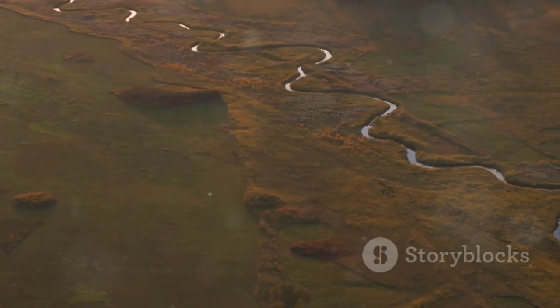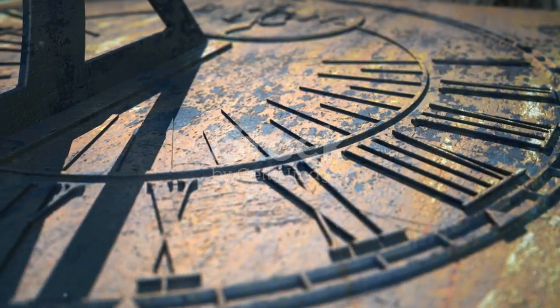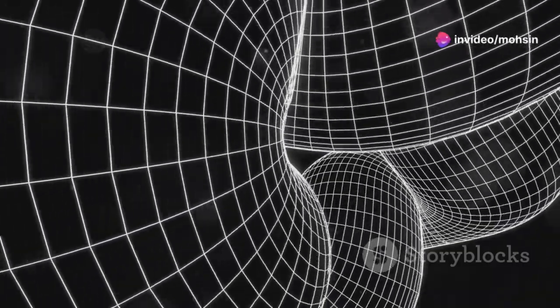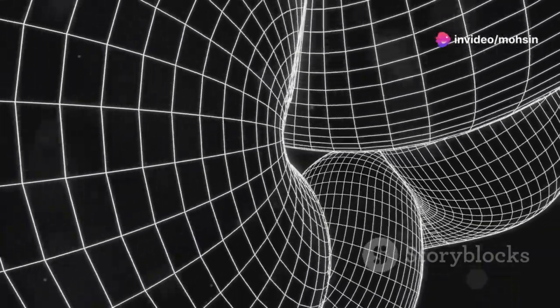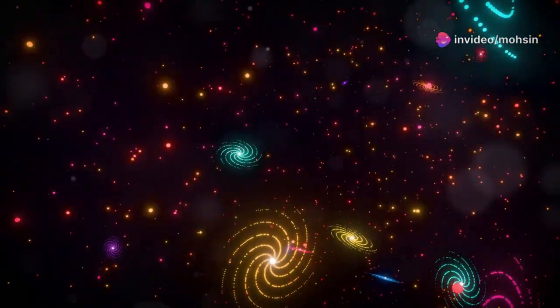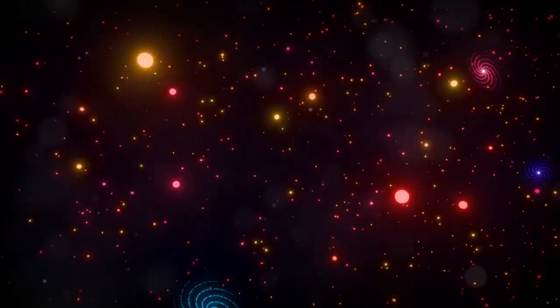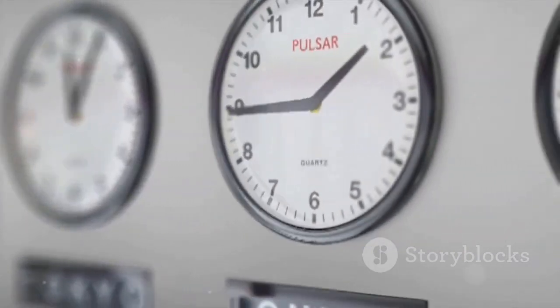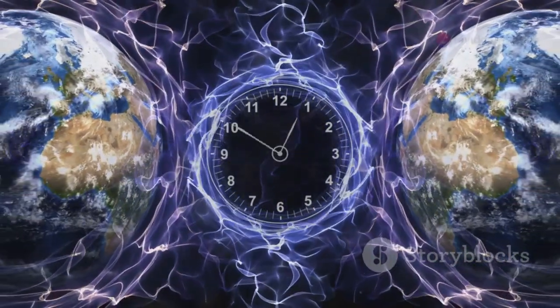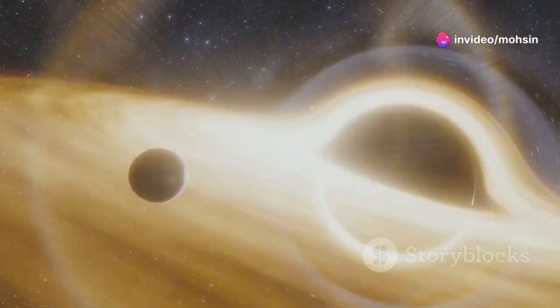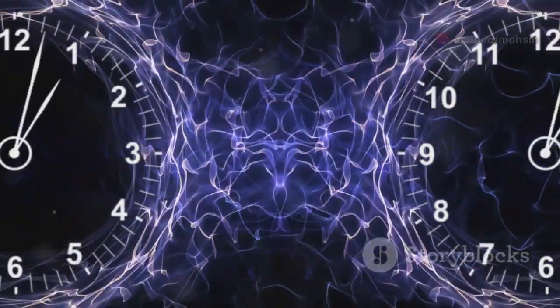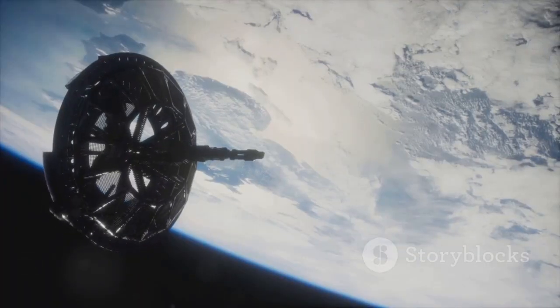For most of history, time was simple—a river flowing from birth to death. We measured it with shadows, water, and sand. Then Einstein changed everything. He saw time as part of a unified fabric with space: spacetime. Four dimensions: three of space, one of time, woven together. In Einstein's universe, time is relative, not absolute. Your clock can tick differently depending on speed or gravity.